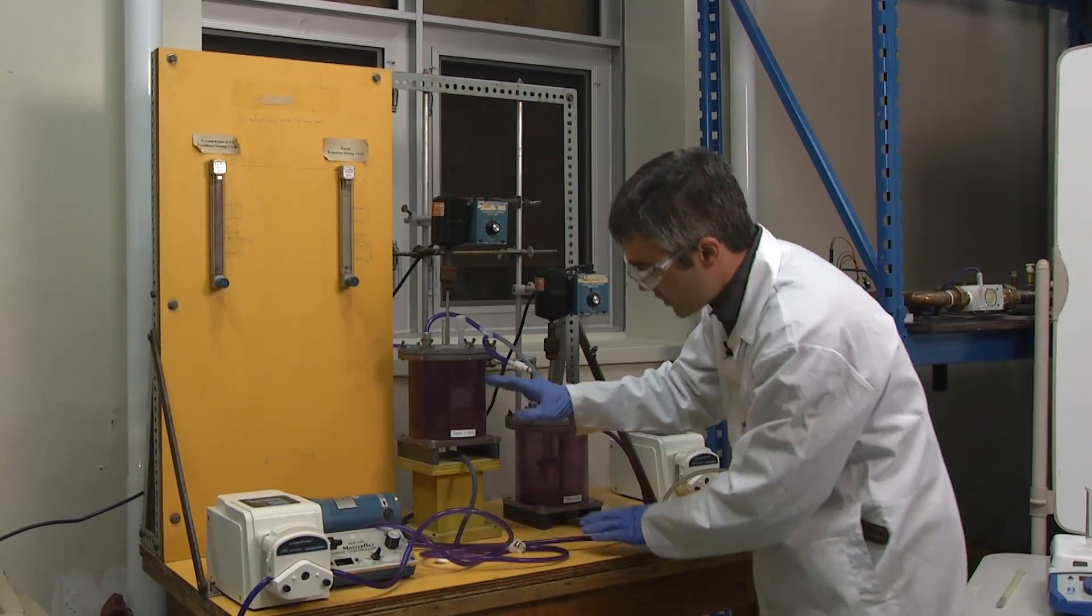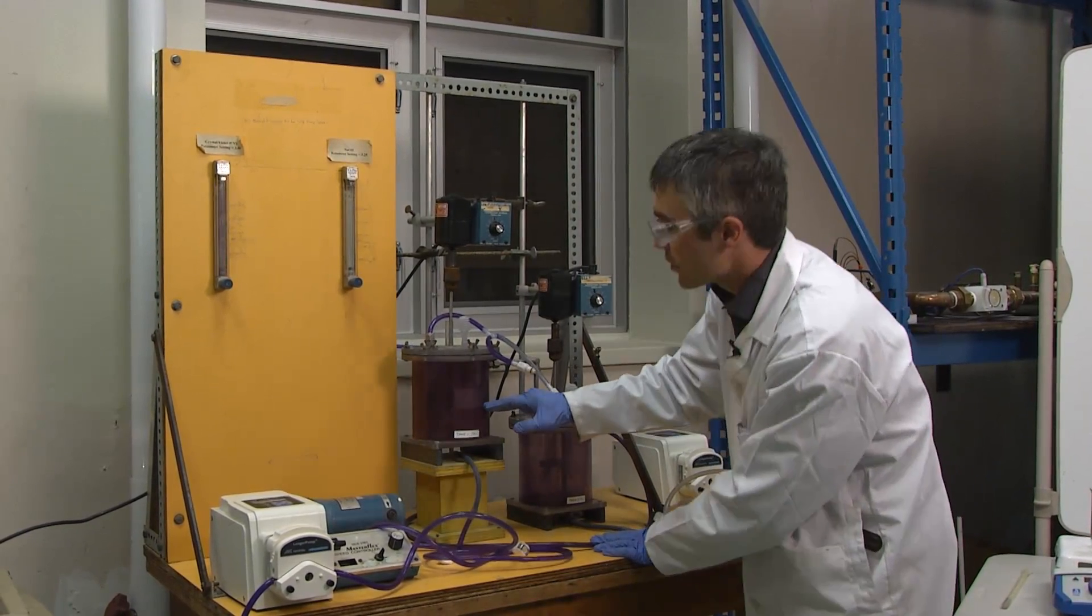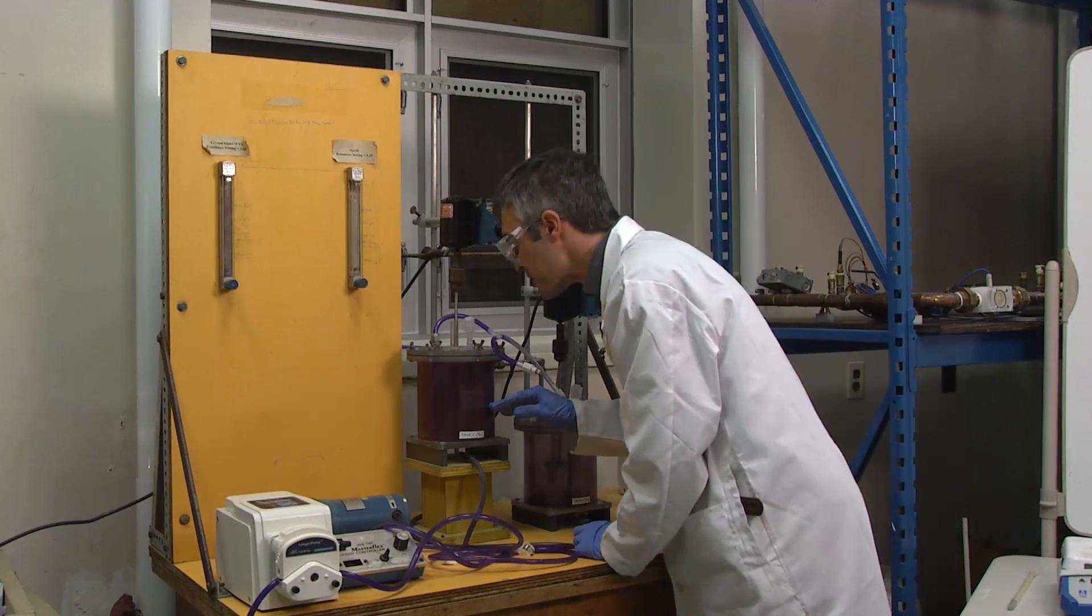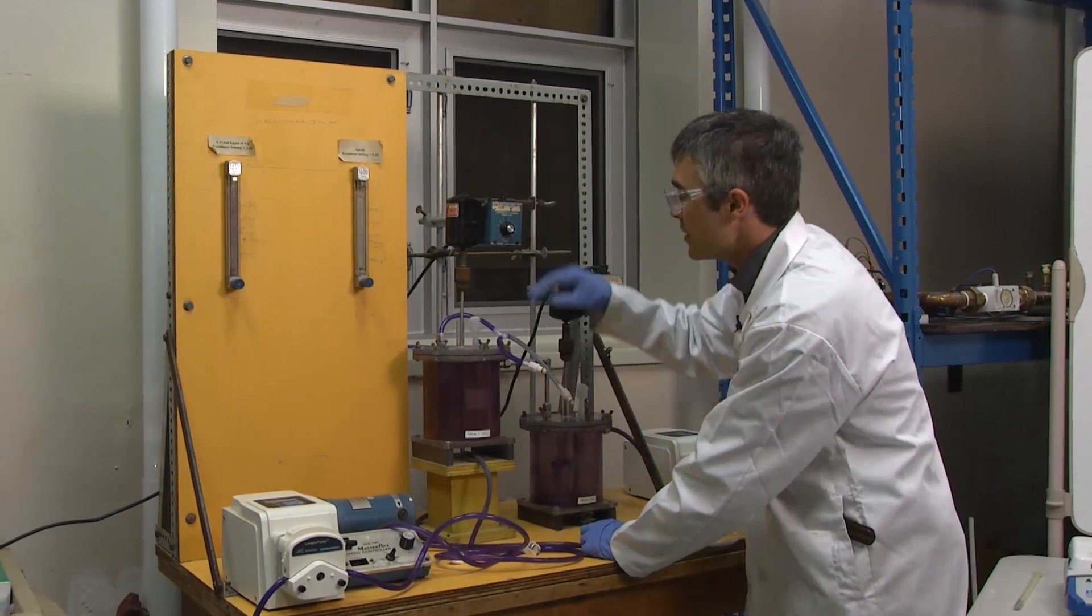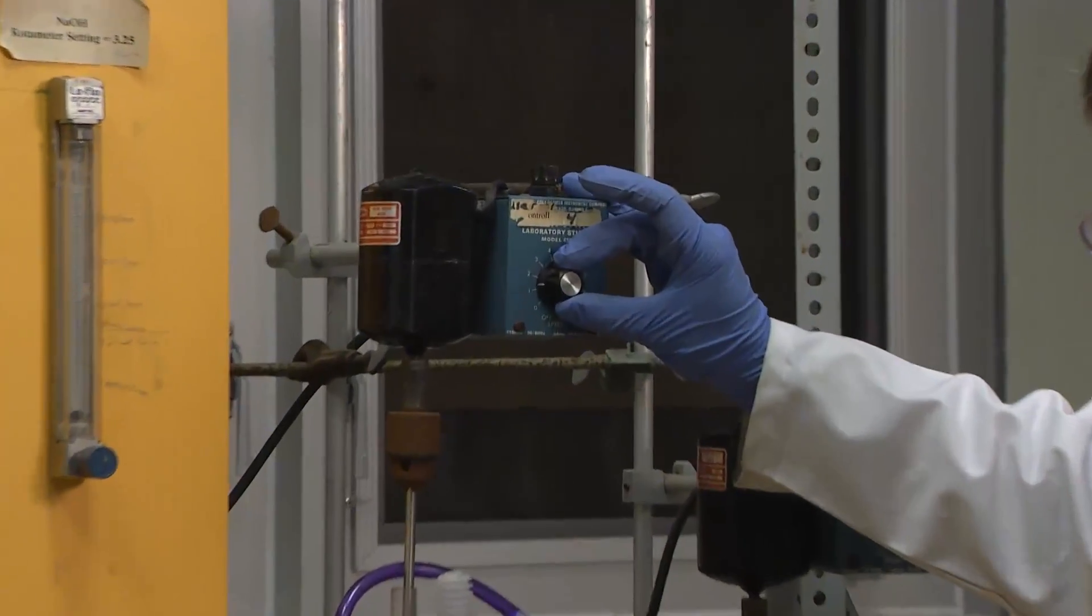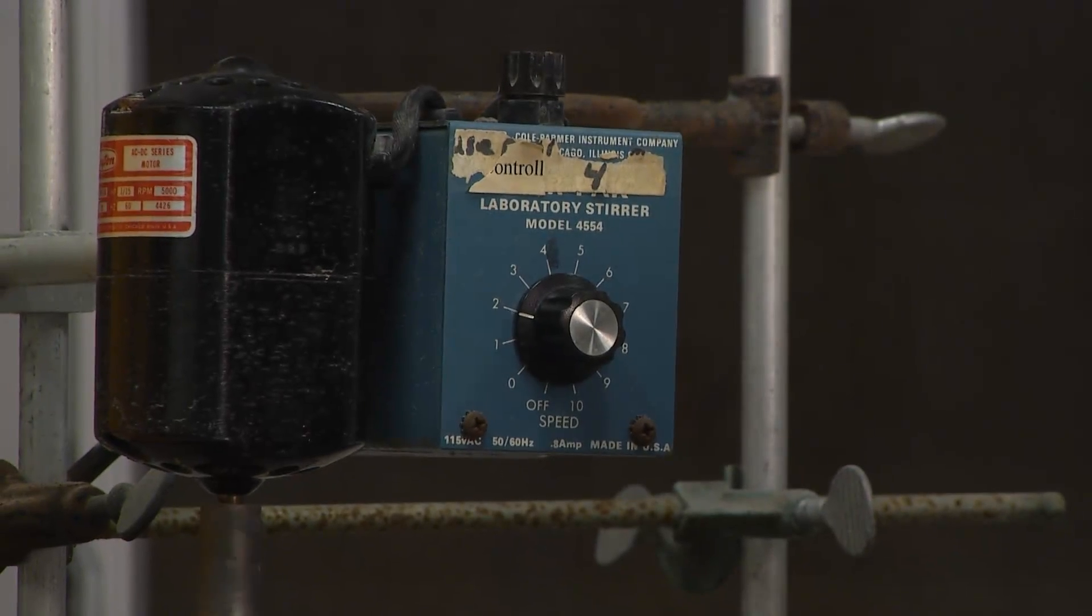Once there is sufficient liquid within the CSTR that you're covering the impeller located in the middle, you'll be able to turn on the unit by adjusting the speed here until appropriate to maintain a continuously stirred environment.